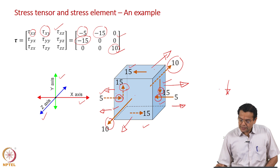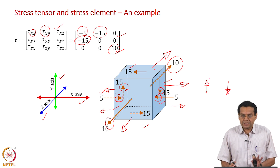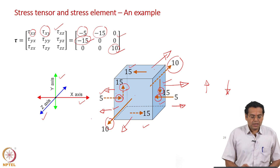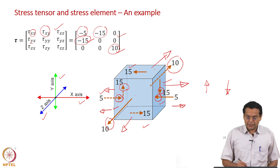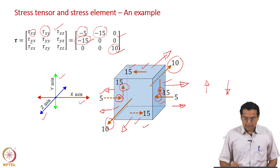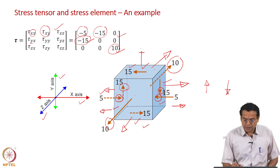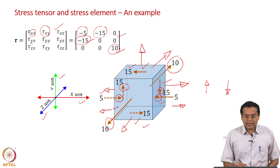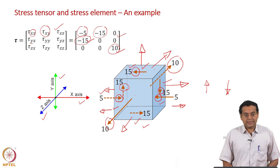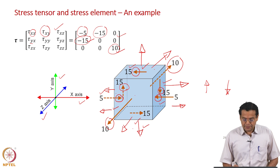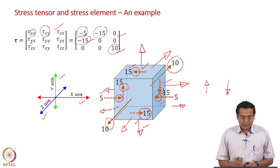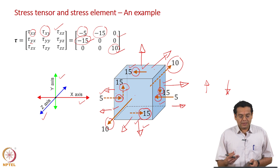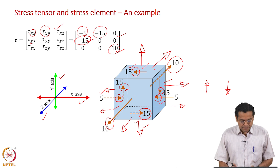Both the right-hand side arrow and the left-hand side arrow are equivalent — both represent only −15. For τyx = −15, the first subscript is y, so we consider the top plane or the bottom plane. For the top plane, the normal is along the positive y-axis; because it is negative, the force direction is along the negative x-axis. For the bottom plane, the normal is along the negative y-axis, and hence the force direction is along the positive x-axis. This is a good simple example to clearly understand the sign convention.